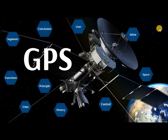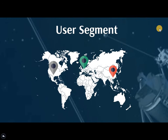The last segment is the user segment. The user segment comprises the GPS receiver device, which is composed of a receiver, an antenna, a processor, and a display screen. The antenna is tuned to the frequencies transmitted by the satellites; the receiver picks up that information and the processor processes it. After processing, the results are displayed for the user in the form of speed, location as latitude and longitude, and other navigation information.